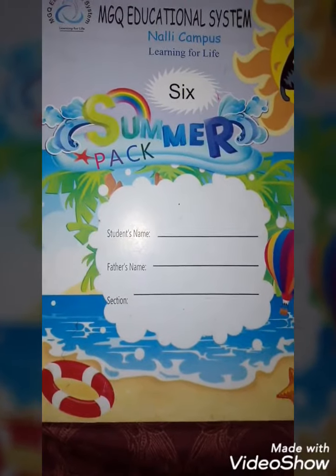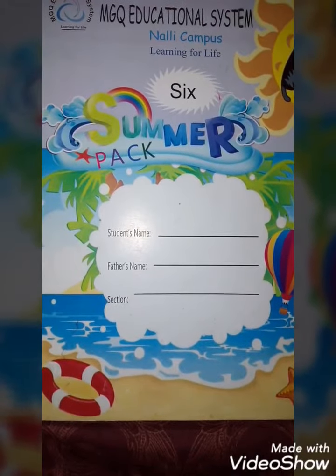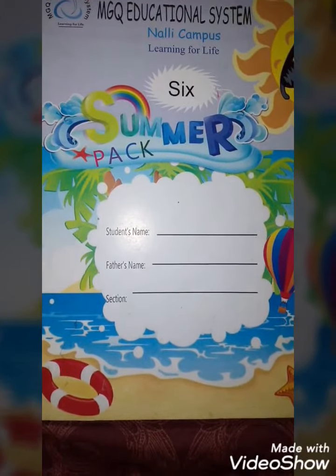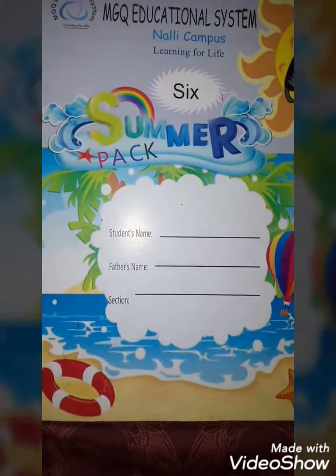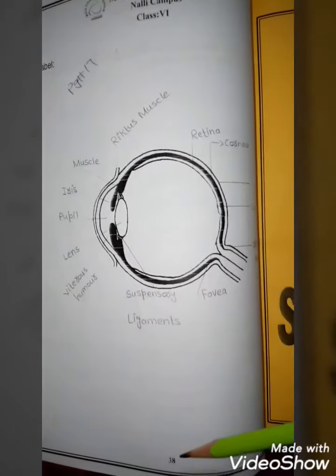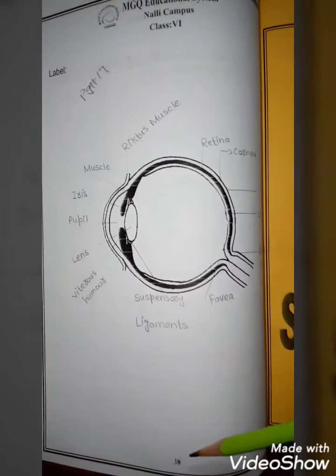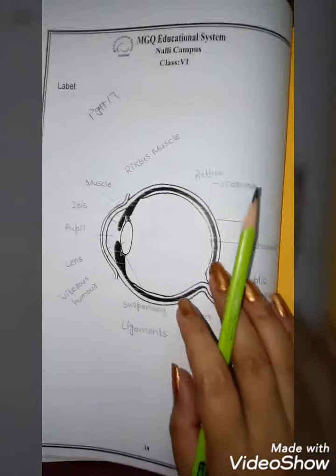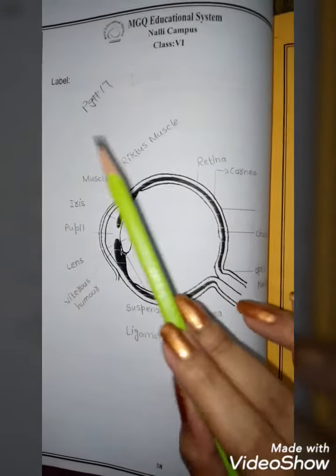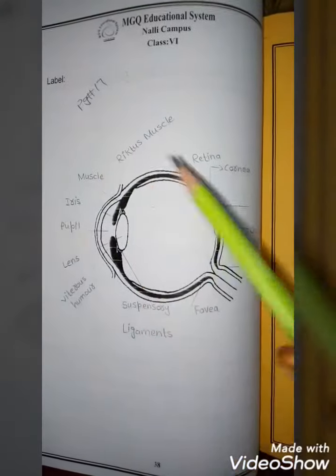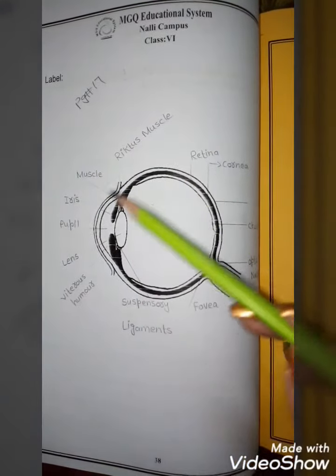Welcome dear students. Today we will solve the summer pack of Science for Class 6. We will solve page number 38, the last page of our summer pack. Here we have a question with a label.